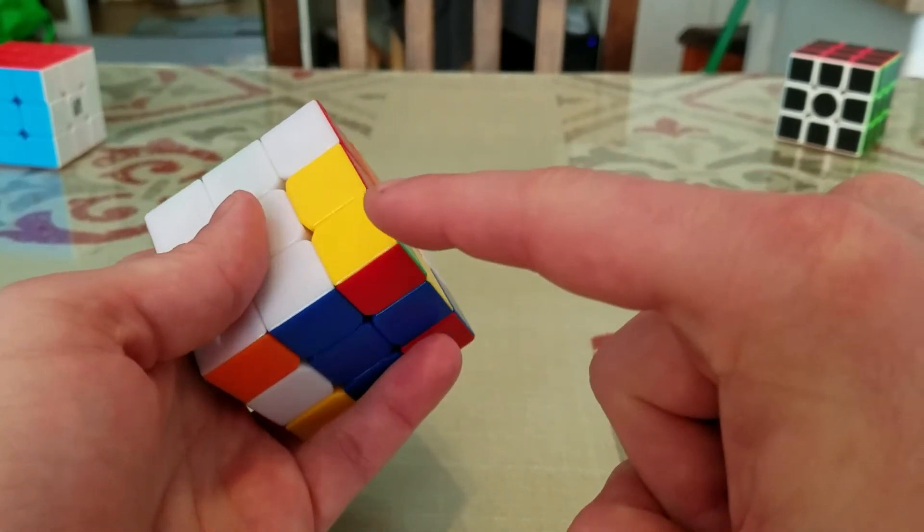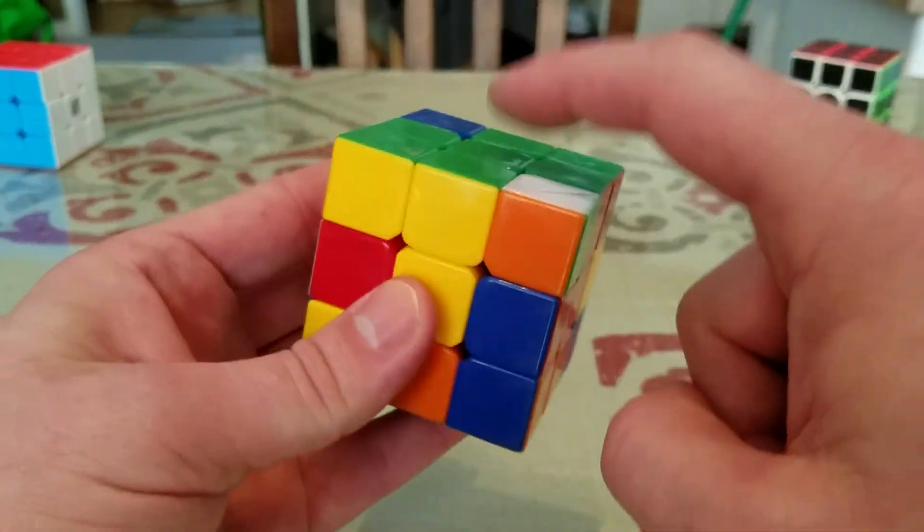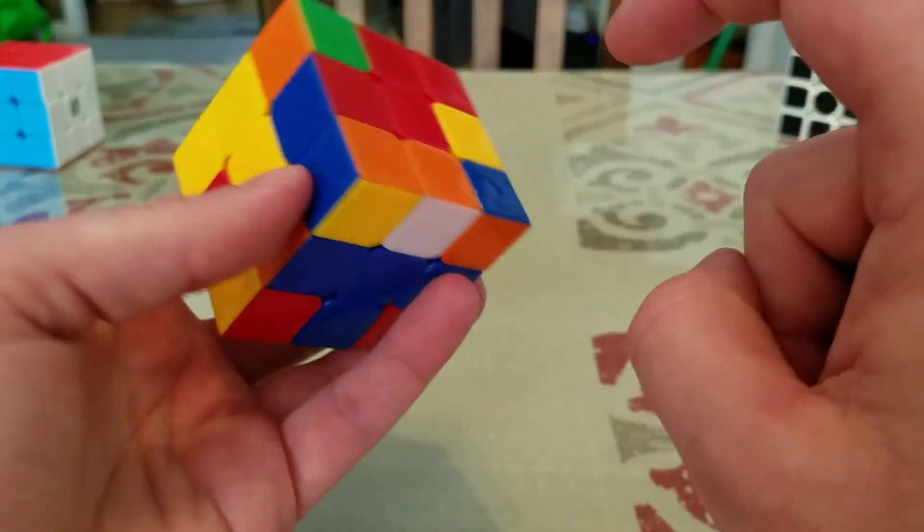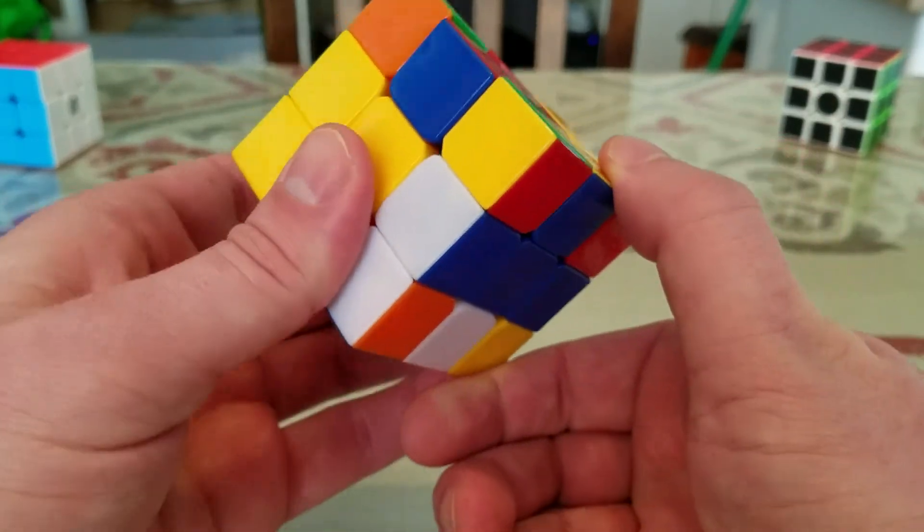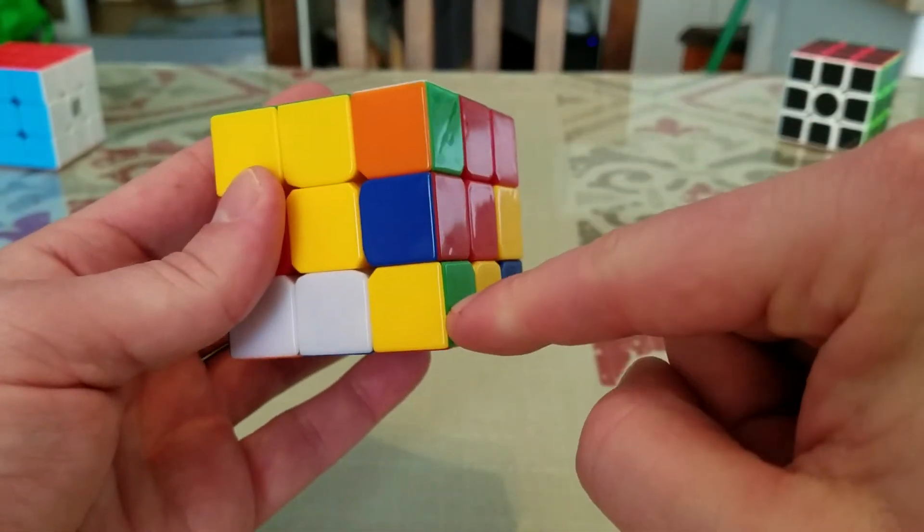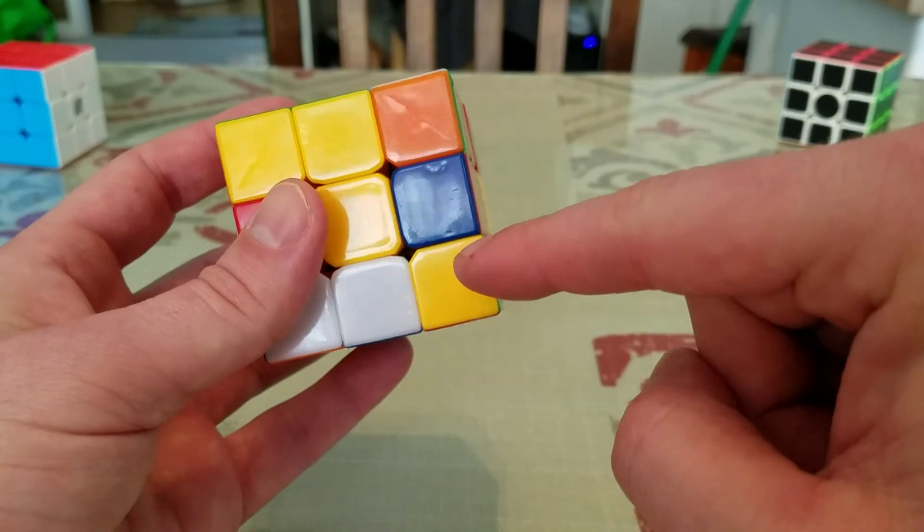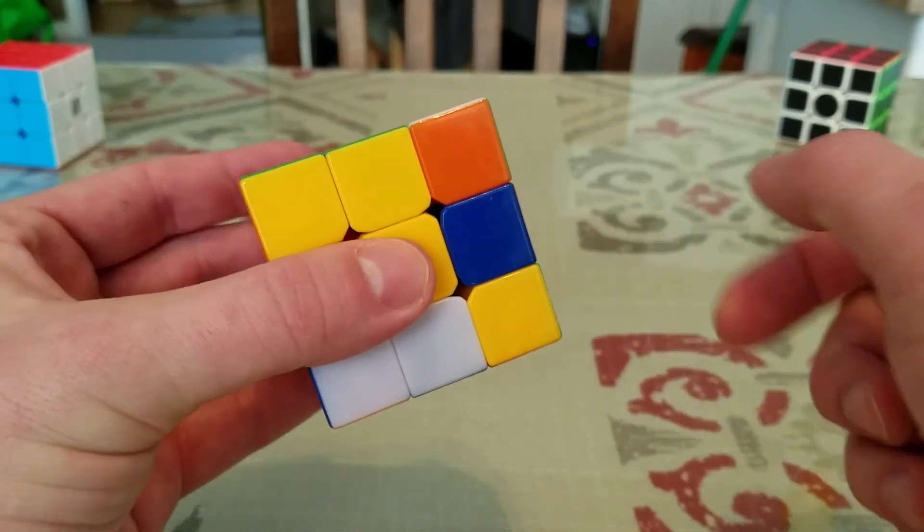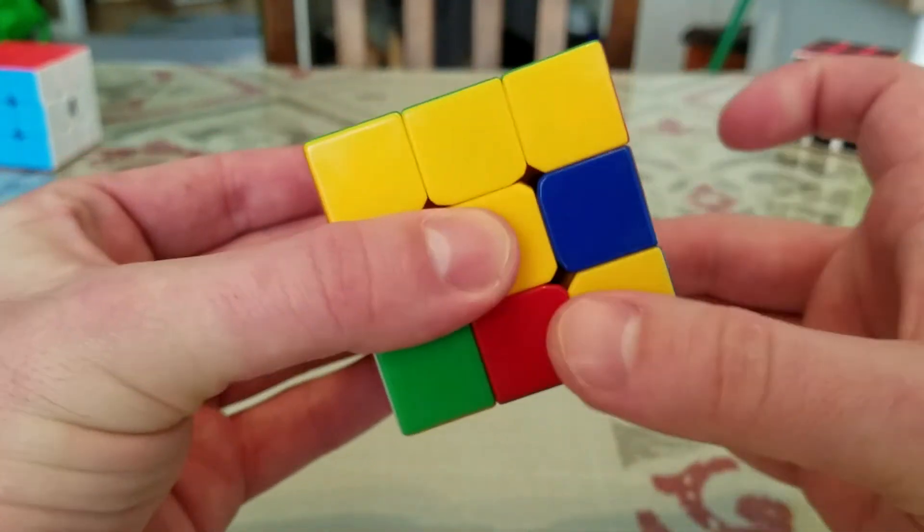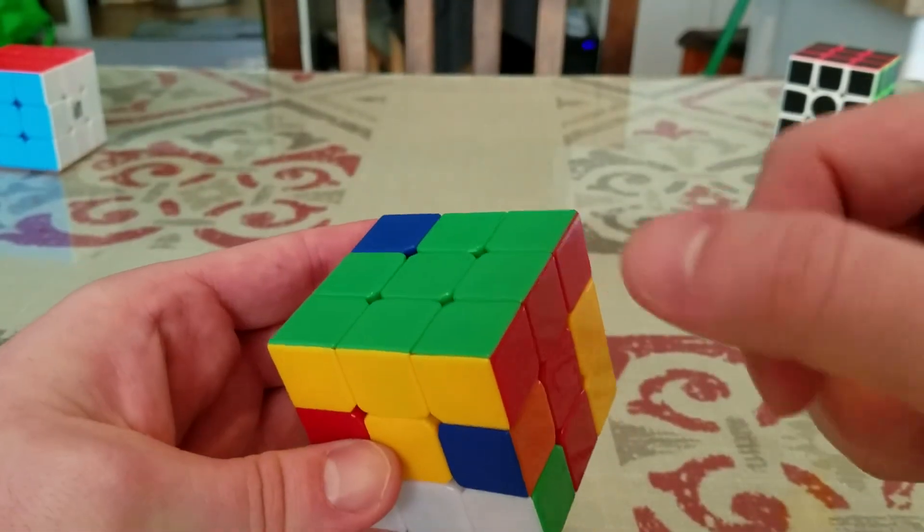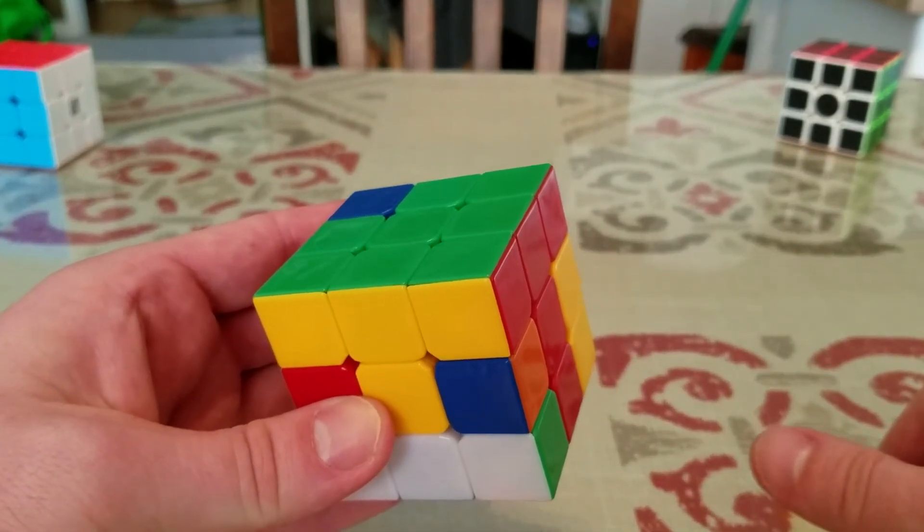So let's find another corner. Here's the green, yellow, and red corner. So if I find the green, red, and yellow side, we need to put this green piece underneath where it's going to go, which is right there. Once the piece is properly oriented, it's the same move. Down, bottom, up, bottom. In that case, it only took one iteration of that move, so it was pretty easy.